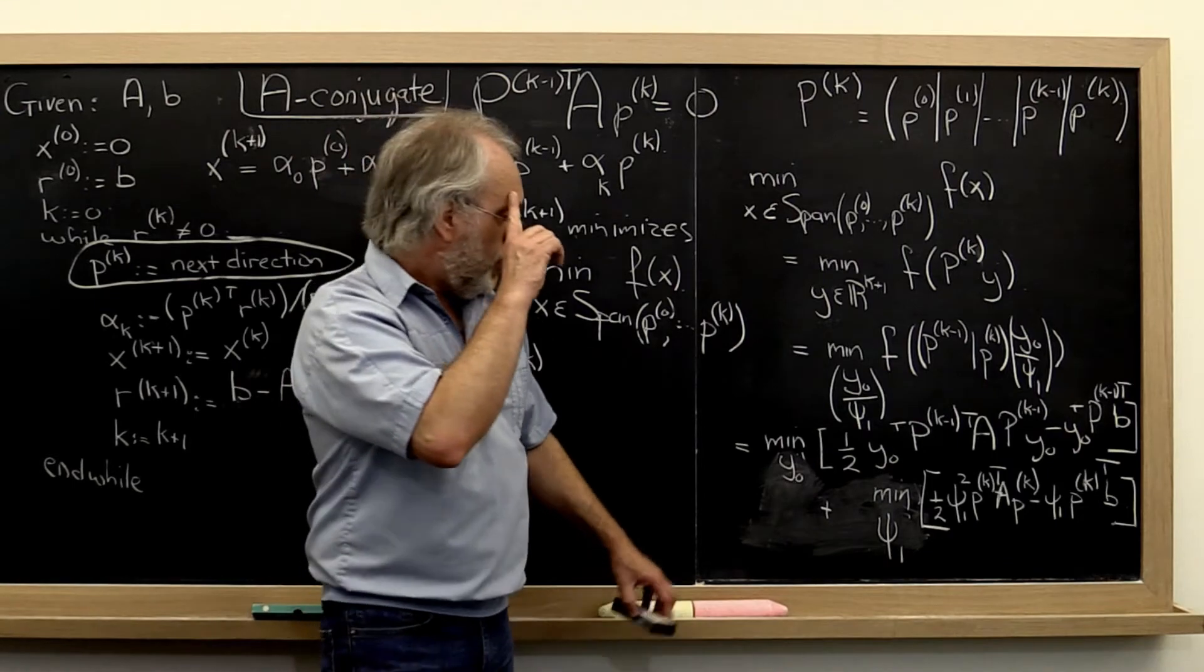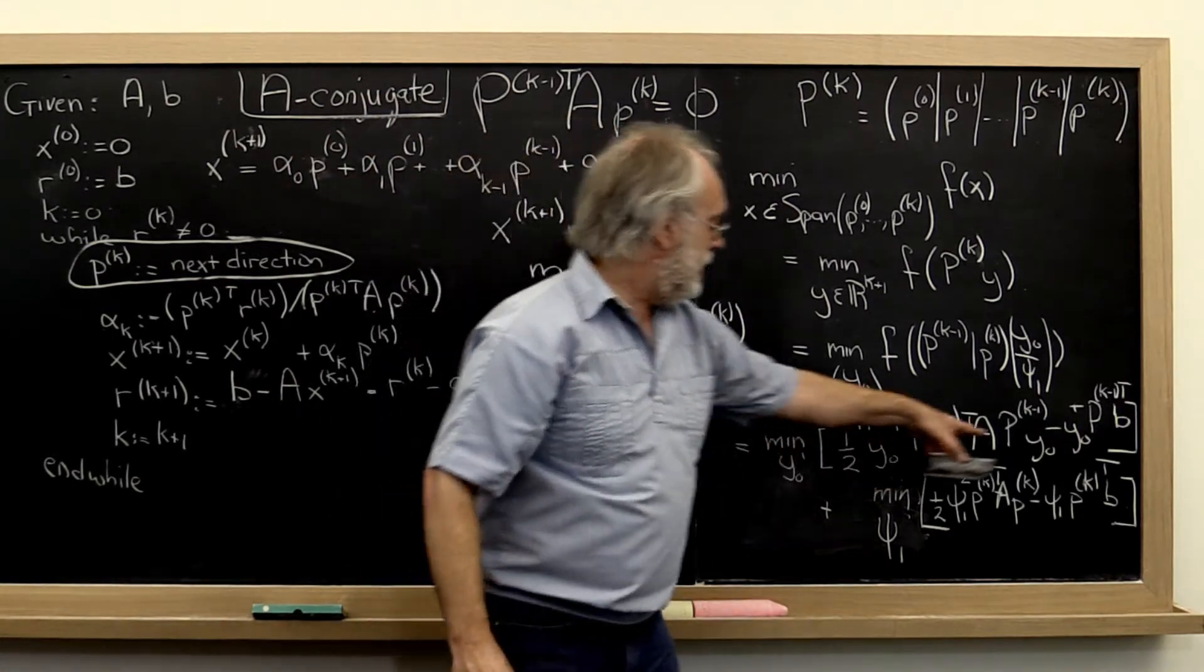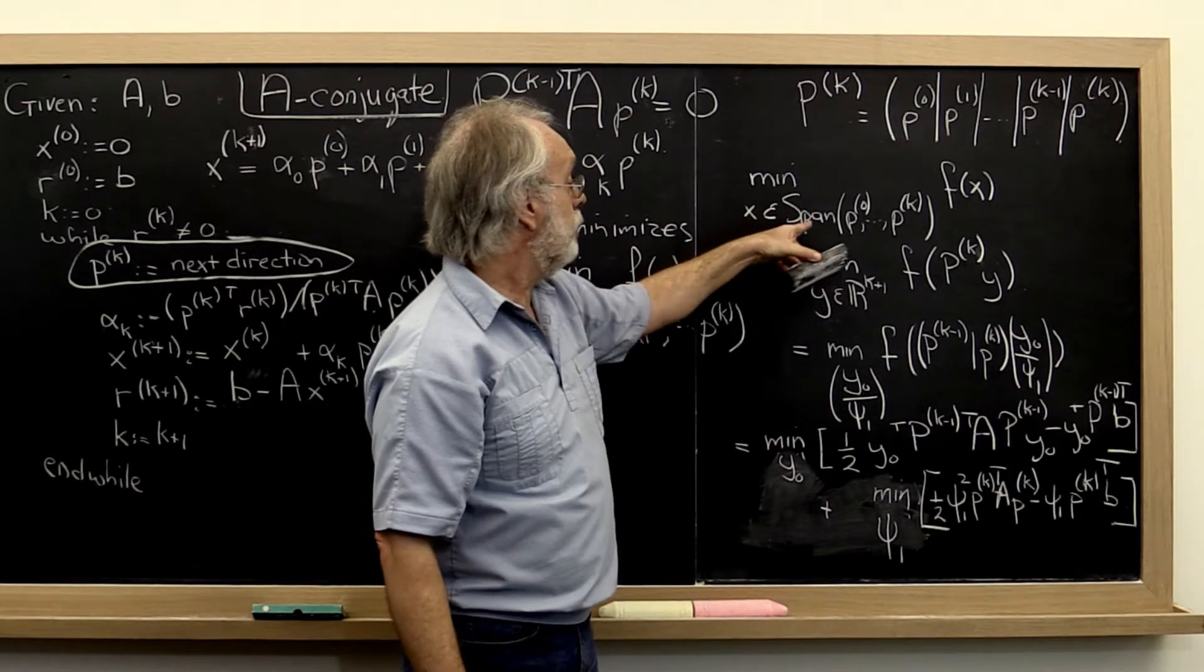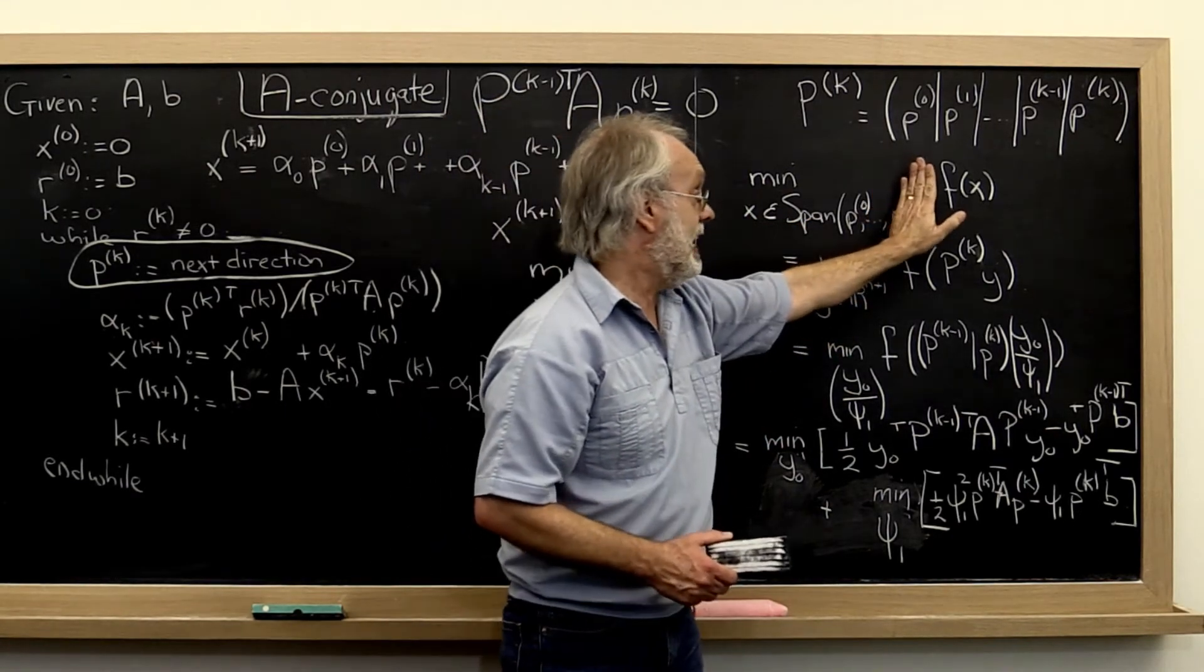And then you say, oh wait a minute, but this really is just the same as minimizing over x over the span of all vectors except for the last one.